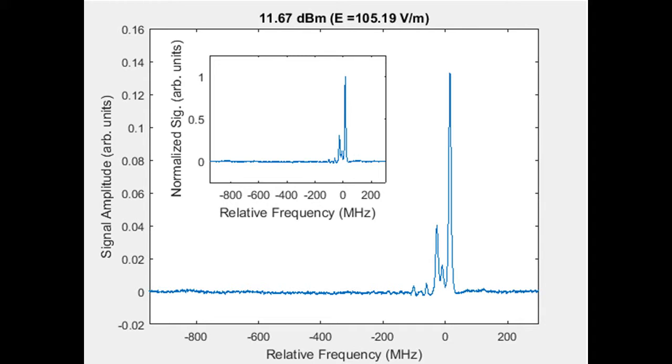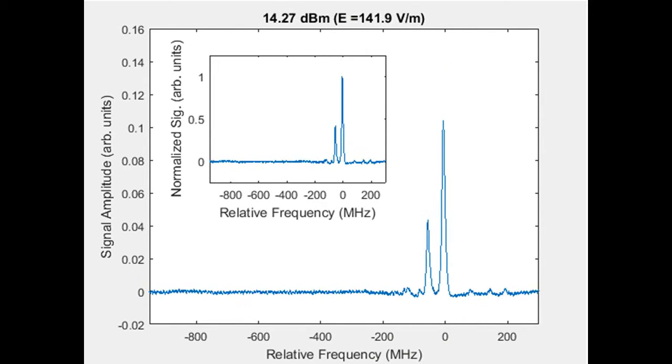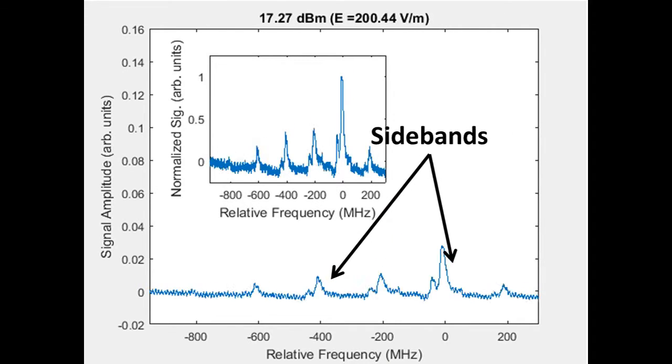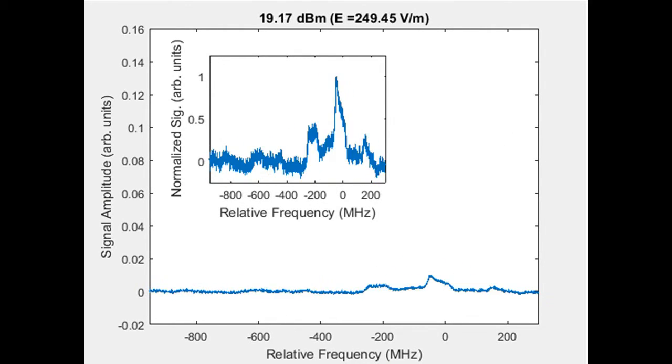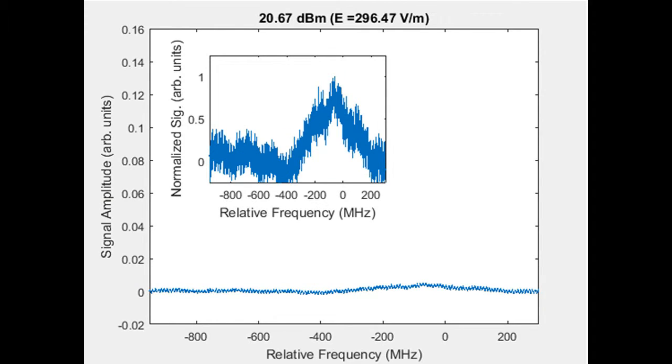As the applied voltage increases, we see that the EIT lines begin to shift in frequency. At high any powers, sidebands occur at even multiples of the driving frequency, and all the lines continue to shift.